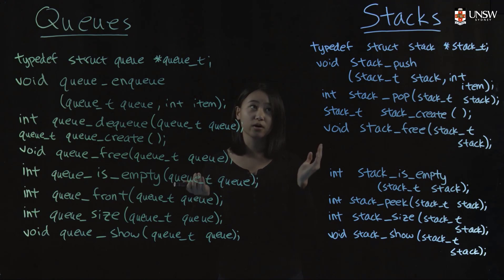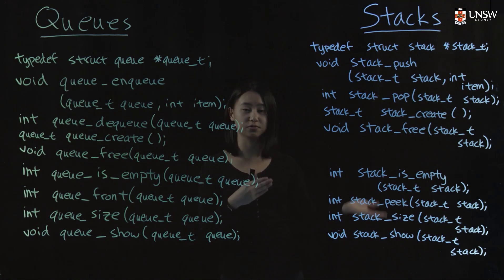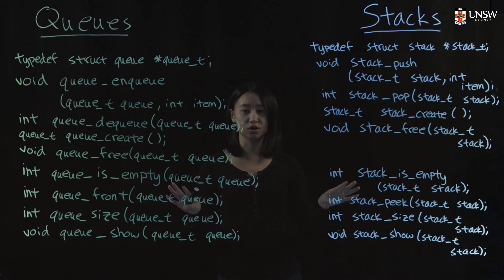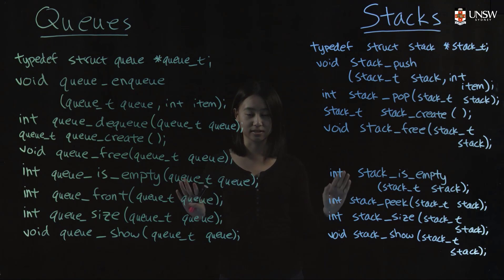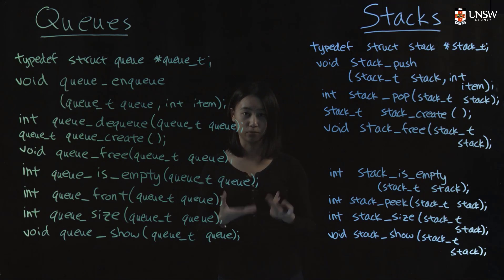Before we use stacks and queues, we need to have interface functions for them, since stacks and queues are abstract data types. For any user using stacks and queues, they don't need to know how stacks and queues are represented — they just need to know about the previously agreed upon operations for stacks and queues.